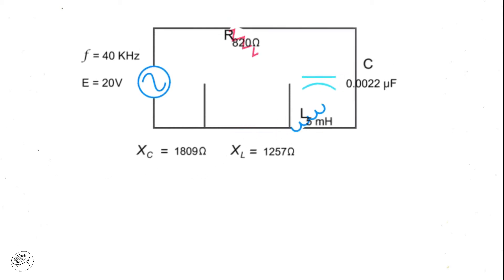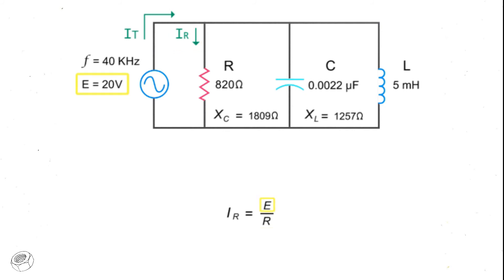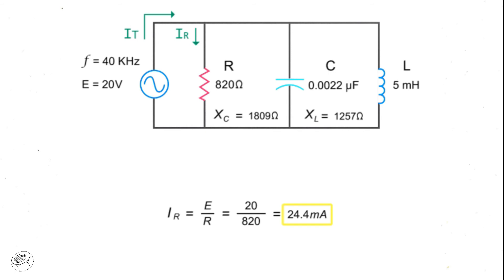Using similar equations, you can also solve for the various current values in a parallel circuit. In this case, we'll use the same resistance values obtained previously for the series circuit. To calculate the current through the resistor, divide the source voltage by the resistance at the resistor, which is 20 volts divided by 820 ohms, which equals 24.4 milliamps.